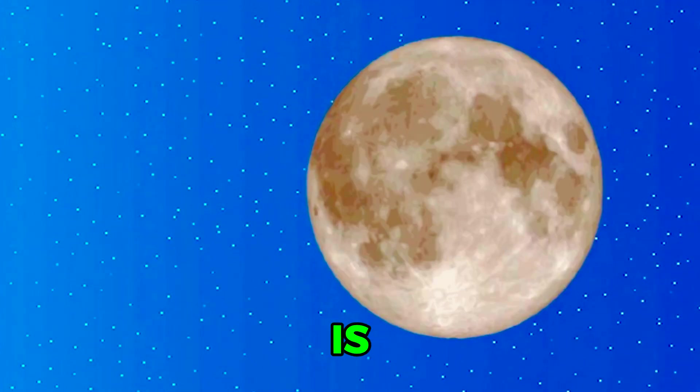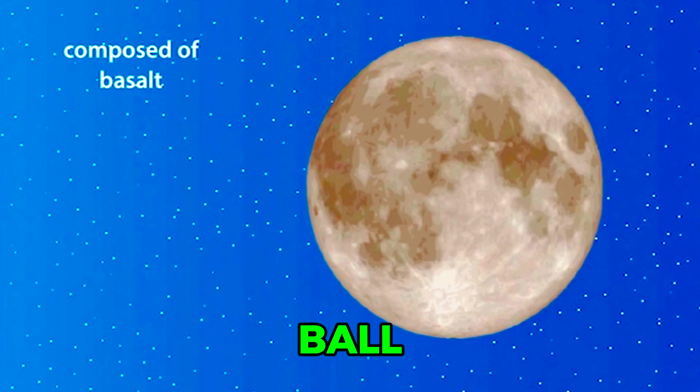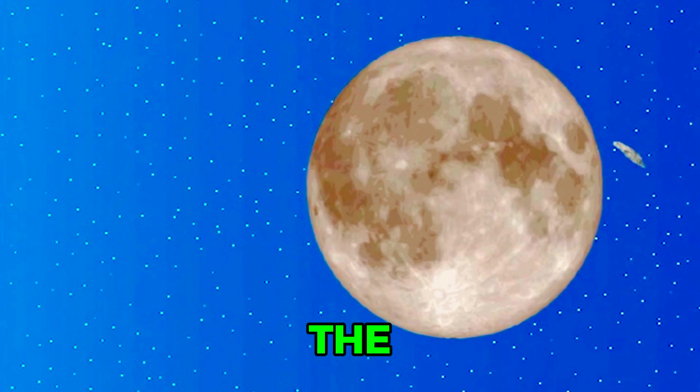The Moon is composed of a solid ball of basalt covered by rocks and dust. Since the Moon's formation billions of years ago, the surface has been struck by asteroids, meteoroids, and comets.